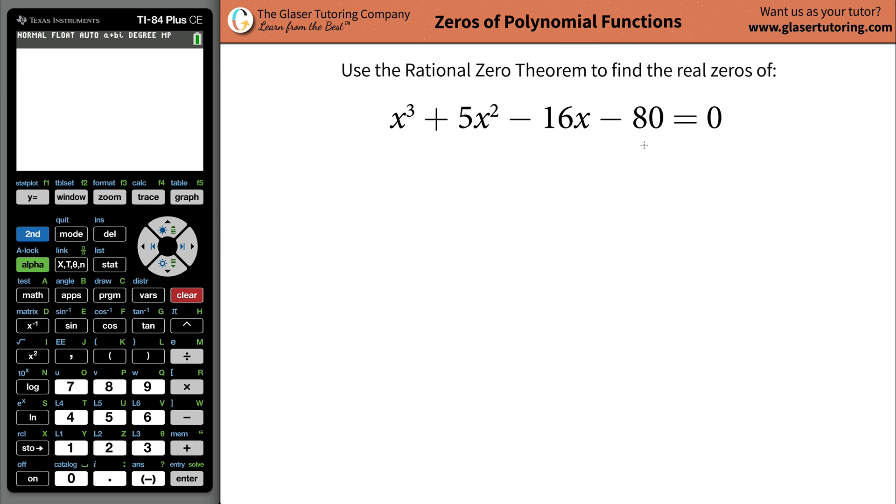Basically what it says is that if you take the factors of your constant term, which the constant term is negative 80, you'd have to find the factors of that. And then you take the factors of your leading coefficient, which is the coefficient of the highest power of x.